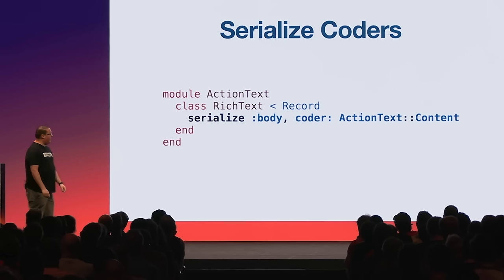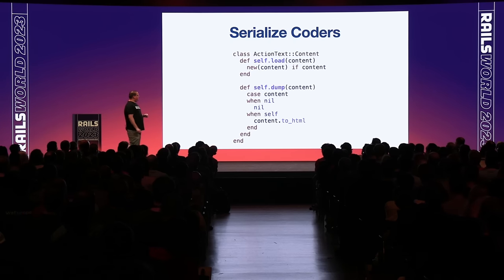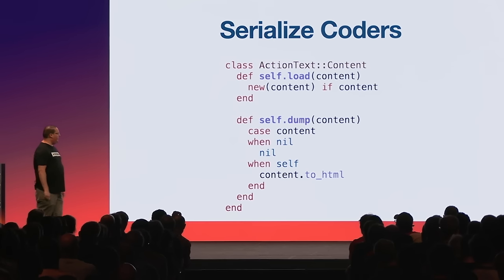You can use `serialize` to take an attribute in your database and serialize it into any Ruby class. To do that, add `self.load` and `self.dump` methods on your class. `load` takes the HTML out of the database — handling nils so we don't instantiate a new Action Text content object if there's nothing there. `dump` takes the Action Text content object and converts it to HTML to save in the database, returning nil if it was empty. This lets Active Record automatically build your objects without defining wrapper methods yourself.